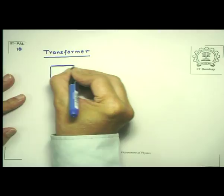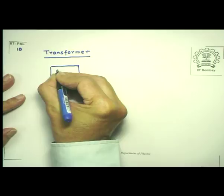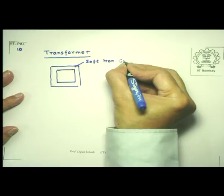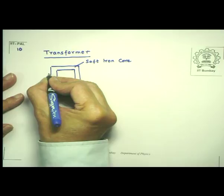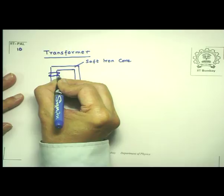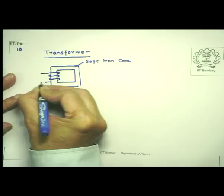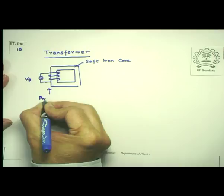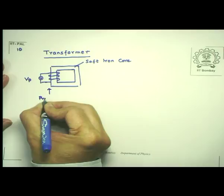A transformer has two sets of coils. Let me show it in one type of circuit — this is not necessarily the only type of arrangement possible. So this is a soft iron core. On one of the arms I have certain turns of wire. I will assume that there is no resistance in this part of the circuit, but there is an alternating source of voltage with an amplitude V primary. This part is called the primary part of the circuit.